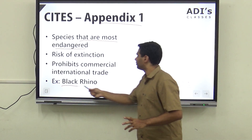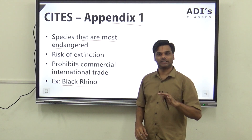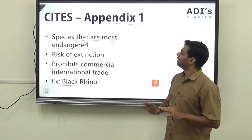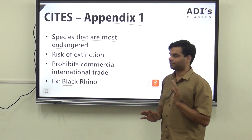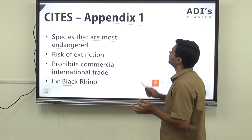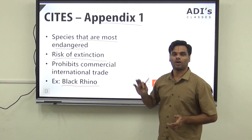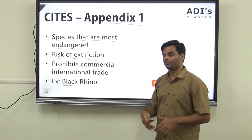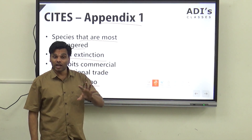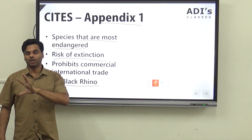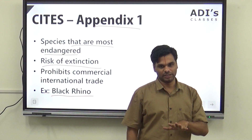What is an example? Black rhino. Black rhino is one of the most endangered species and CITES has it in Appendix one. These are almost at the risk of extinction — if trade continues, they will go extinct. These are those kinds of flora and fauna, not just animals, but both plants and animals.